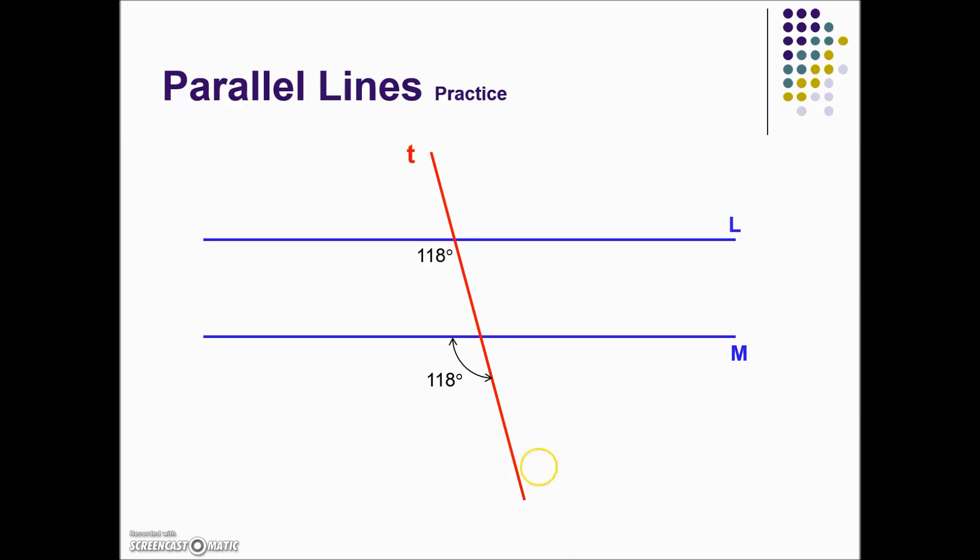Its corresponding angle in the same position would also have 118 degrees. The vertical angle to the given angle has 118 degrees, as does the vertical angle here, as does the vertical angle here, or it corresponds. It's in the same position. They're both to the right of the transversal and above the parallel line.